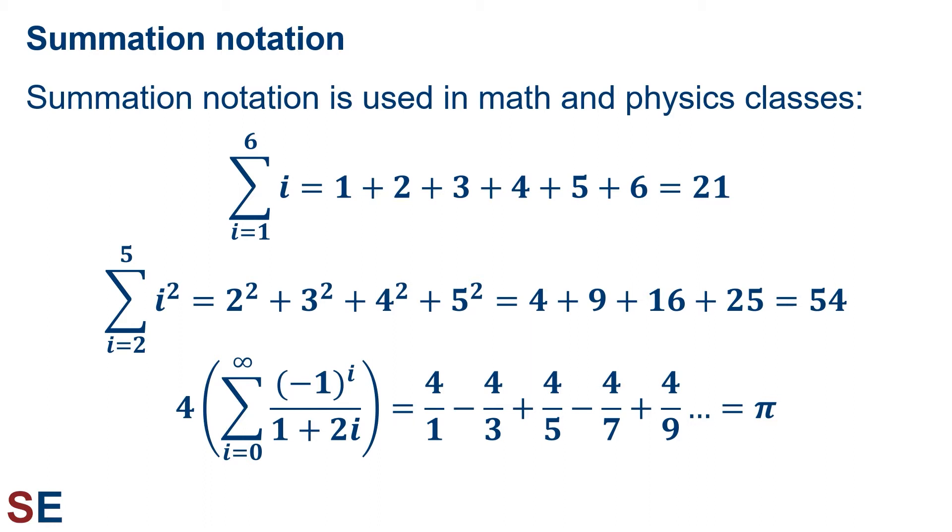So in the first example, the sum indicates we're going to start when the value of i is 1, as shown below the symbol. We will then add it to the next term, for which the value of i will be 2, and then add it to the next term, for which the value of i will be 3, and so on until we get to the last value of 6, which is shown above the symbol.